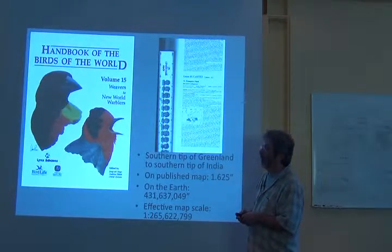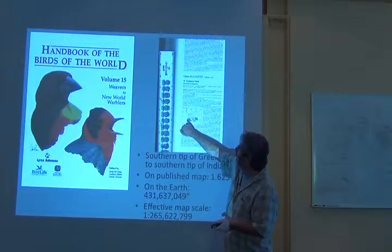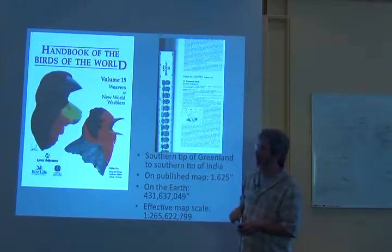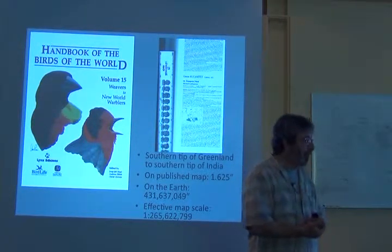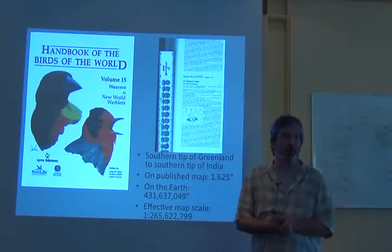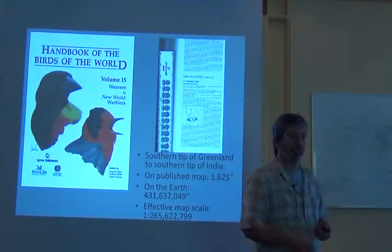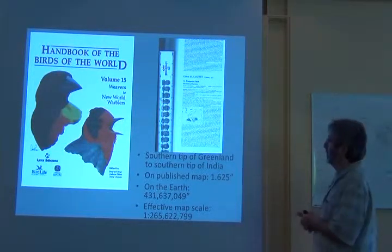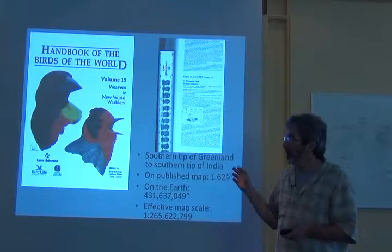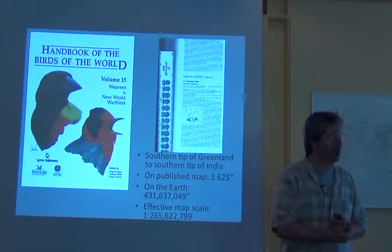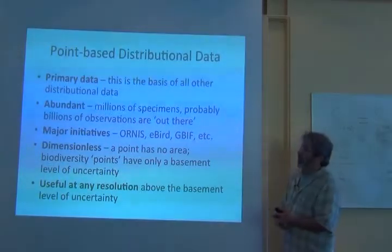And of course, that map assumes that the distribution is correct. We know that this species is not present continuously across all of those regions. That's usually expert-drawn. The experts are experts and they know what they're doing, but they don't know everything and they haven't been to every site. Generally what experts do is generalize from some experience based at a few sites and guess — an educated guess, but it's a guess. So this is kind of the bullshit factor in biodiversity informatics, in macroecology, in conservation. There's a lot of marketing and a lot of bullshit.